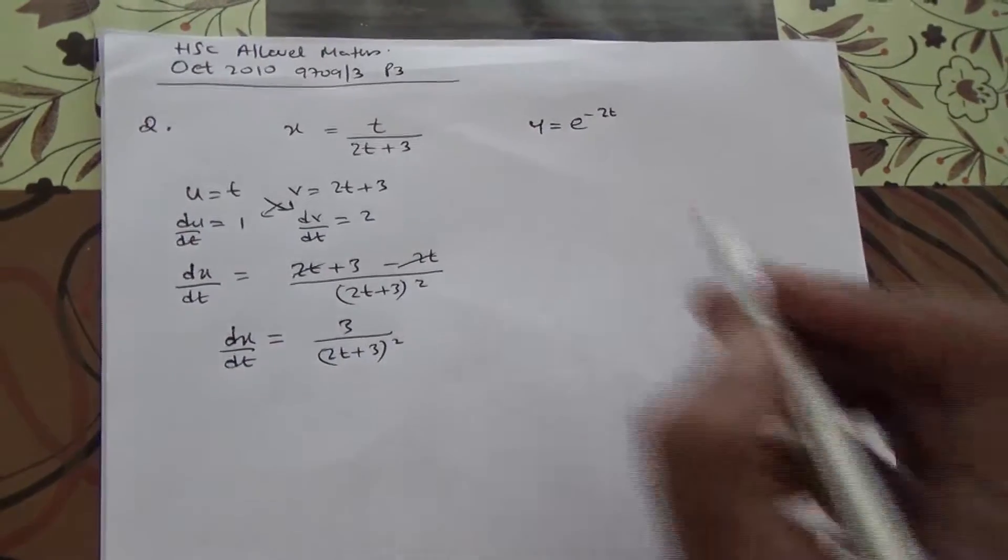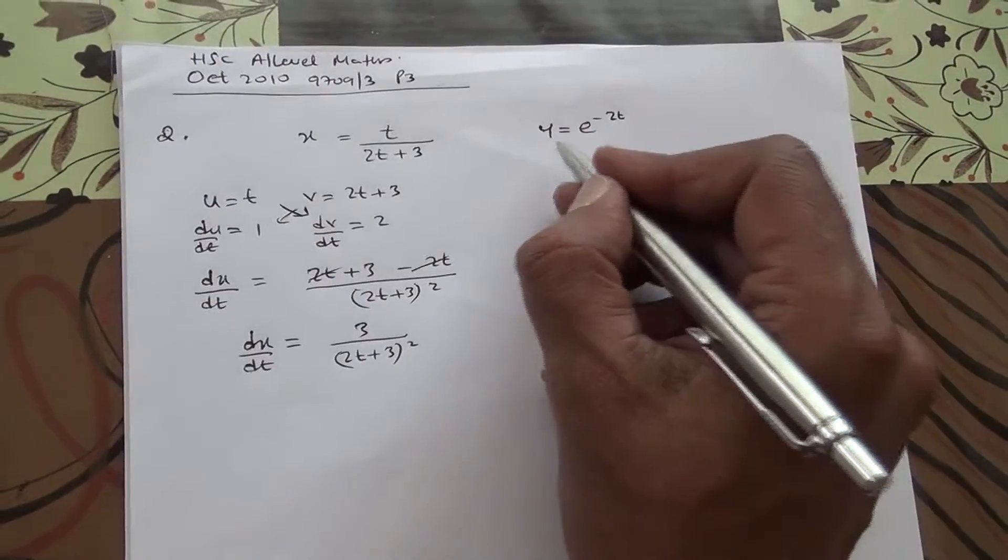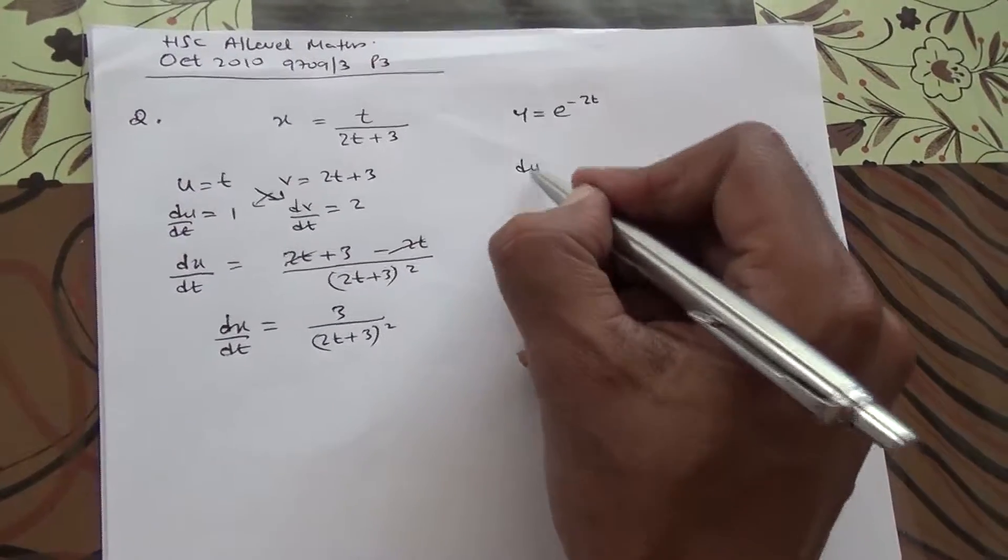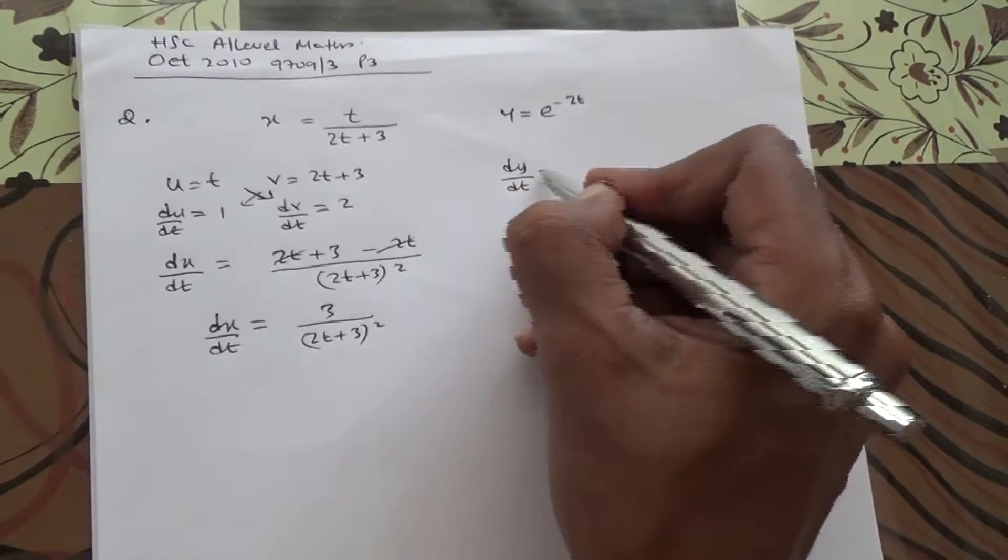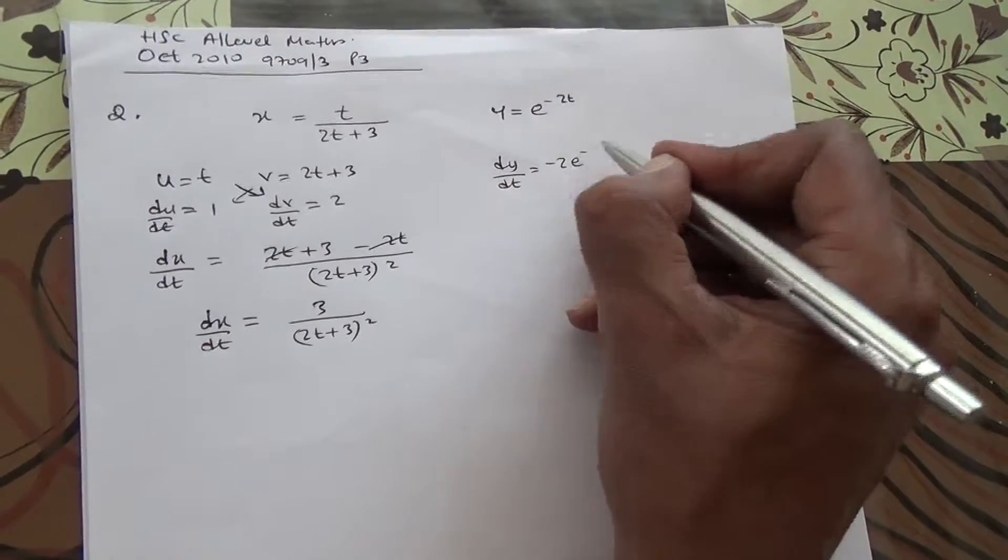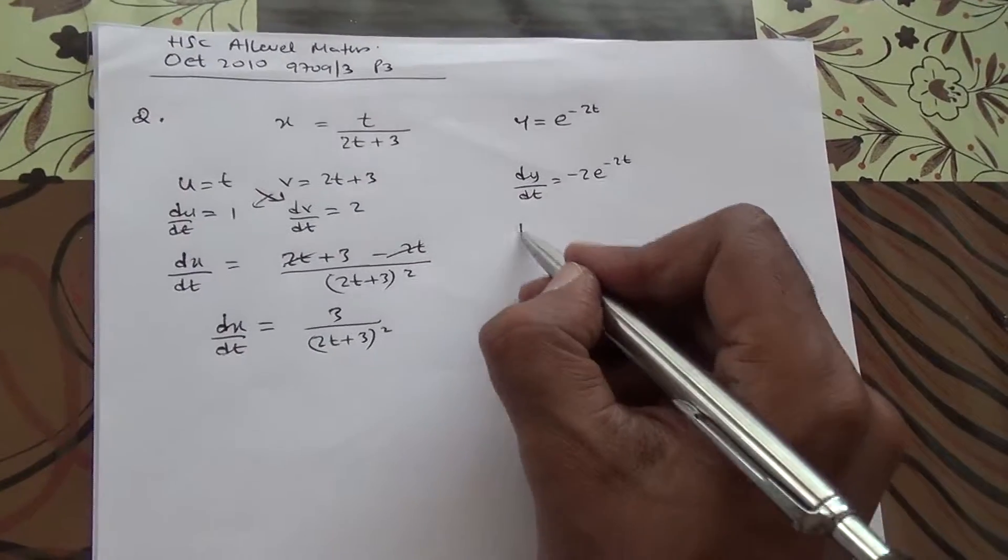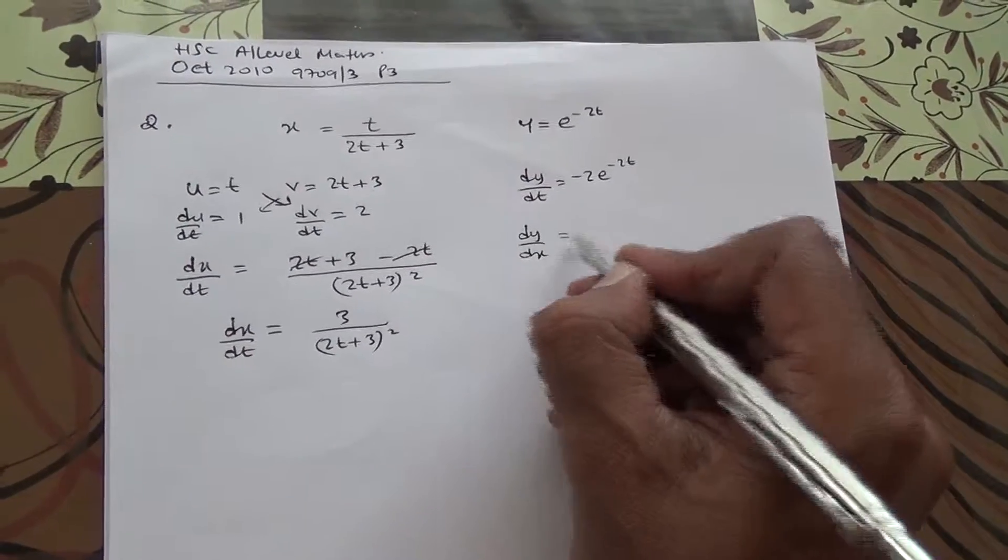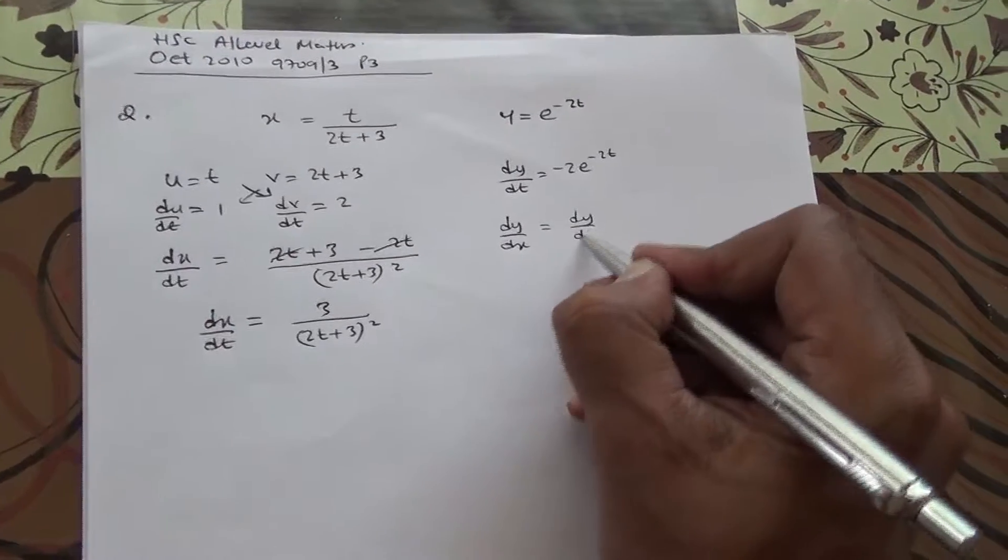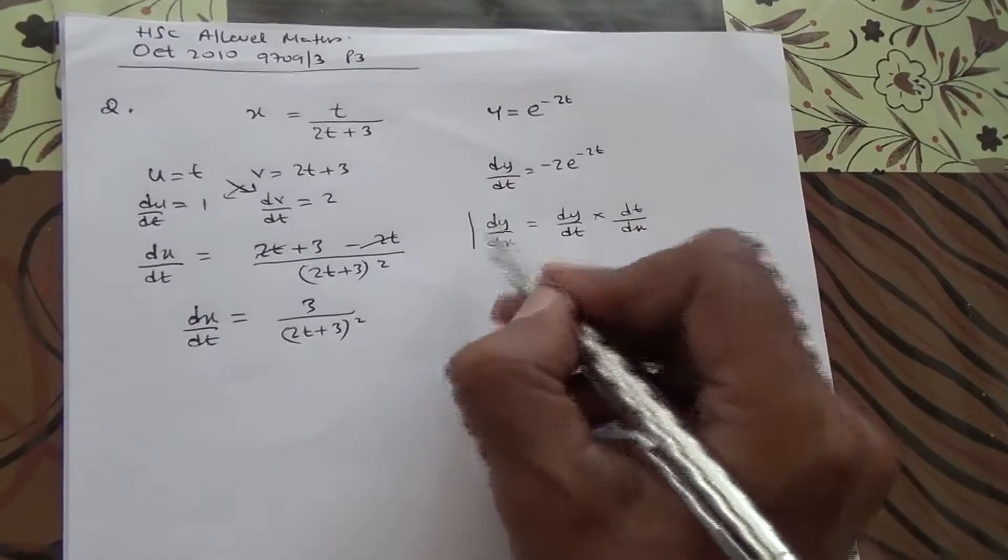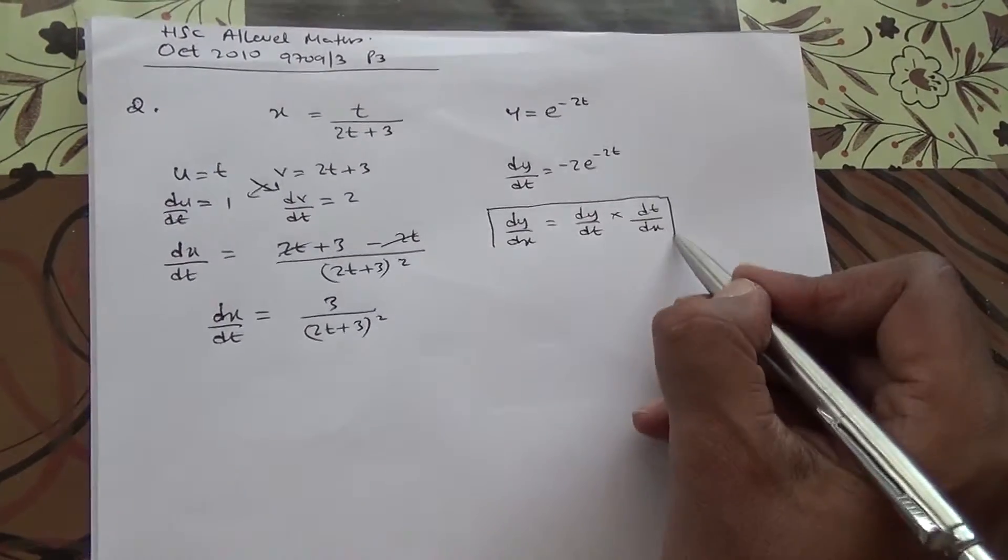Now, similarly, we're going to be differentiating this one, so we have y equals this exponential function, therefore dy by dt is going to be minus 2e to the minus 2t. So, what is dy by dx? Therefore, dy by dx equals dy by dt times dt by dx, so this is what is going to give us the answer.